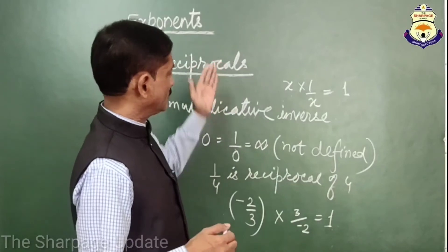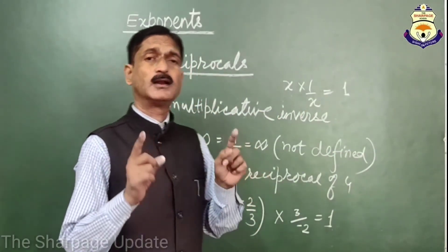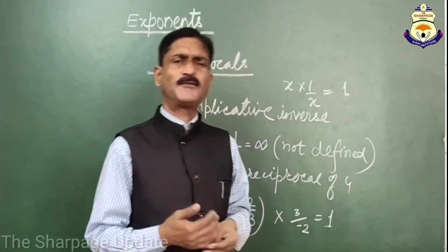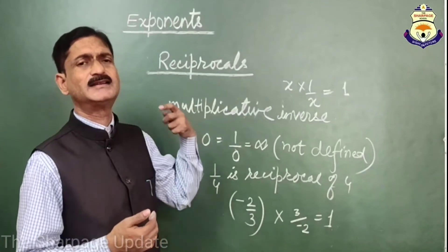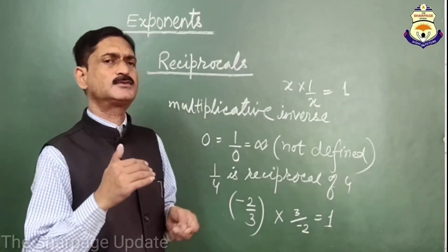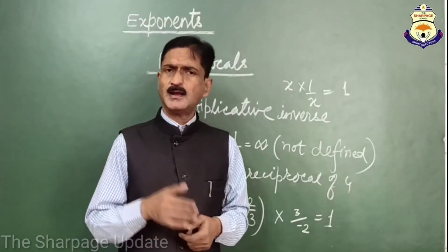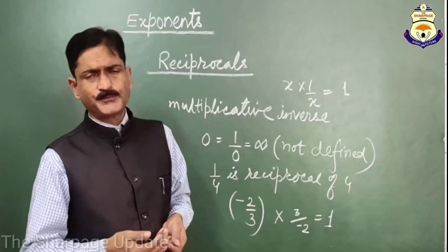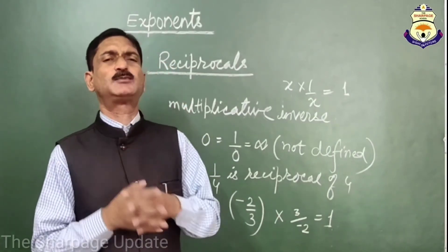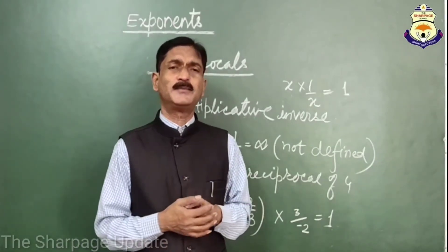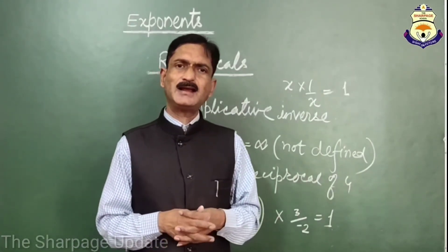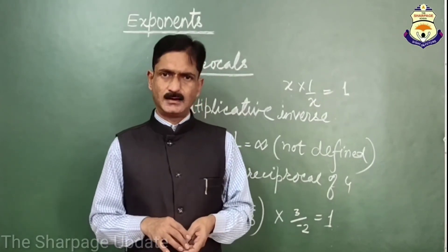The reciprocal is also known as multiplicative inverse and there is no reciprocal of 0. So my dear friends, with these rules — with the definition of exponents, the definition of reciprocals, or multiplicative inverse — I think now you will be able to solve problems based on powers and exponents. In the next video, I will explain some examples based on powers and exponents and how we can find the value of unknown variables in exponential equations. Till then, goodbye. Please like and subscribe to the channel, The Sharping Update.